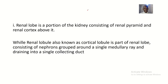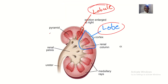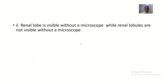The renal lobe is a portion of the kidney consisting of a renal pyramid and the renal cortex above it. This area here is the renal pyramid, and this area upward is the renal cortex — so the renal lobe is composed of the renal pyramid and the renal cortex above it.